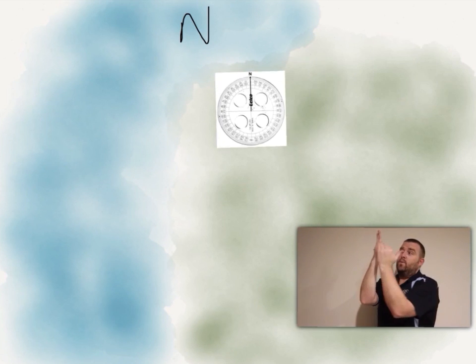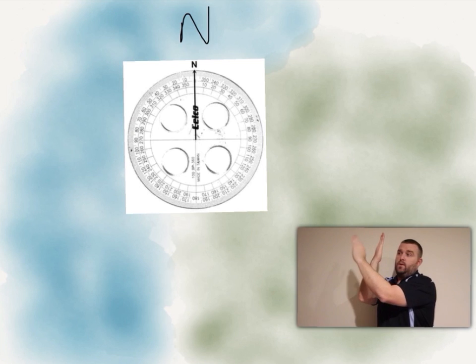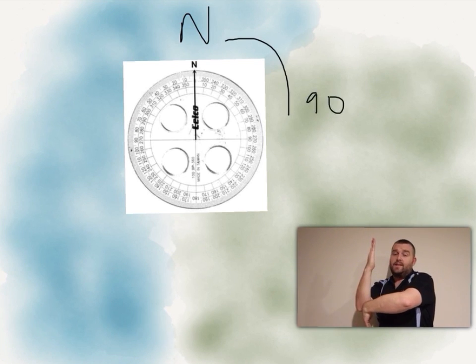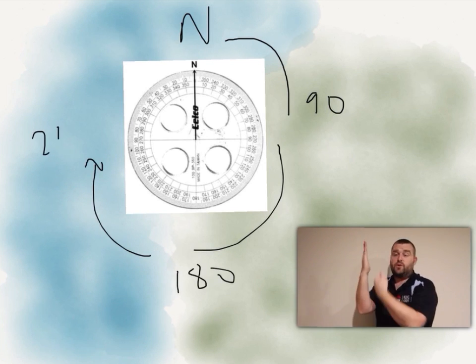If we have say north on the map, we'll call that zero degrees. Then we'll follow around for the bearings zero all the way down to 90 degrees, 180 at the bottom, 240, back up to 360 again which is a revolution and obviously we're back at zero for north.